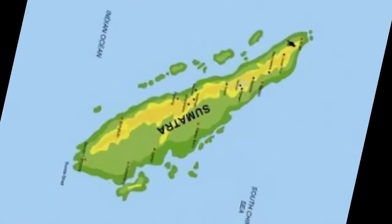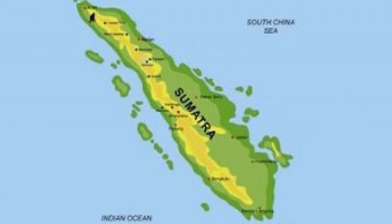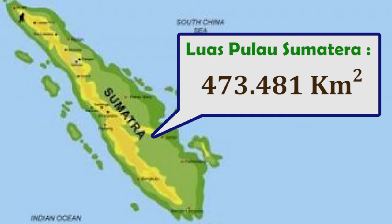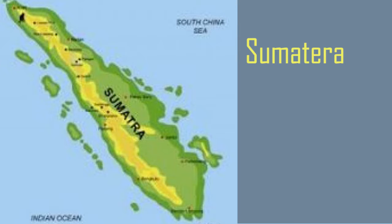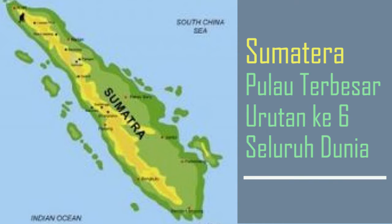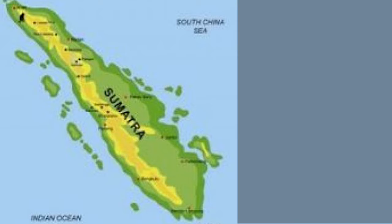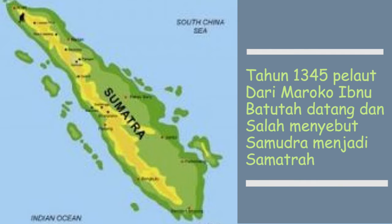Anak-anak, setelah mempelajari tentang Pulau Jawa, sekarang kita mempelajari pulau di ujung barat Indonesia, yaitu Pulau Sumatra. Dengan luas sebesar 473.481 km persegi, Sumatra menjadi pulau terbesar ke-6 di dunia. Nama Sumatra sendiri berawal dari keberadaan Kerajaan Samudra yang terletak di pesisir timur Aceh. Pada tahun 1345, seorang petualang asal Maroko, Ibnu Battuta, berkunjung ke sana dan salah melafalkan nama Samudra menjadi Sumatra. Nama inilah yang kemudian dikenal hingga detik ini.